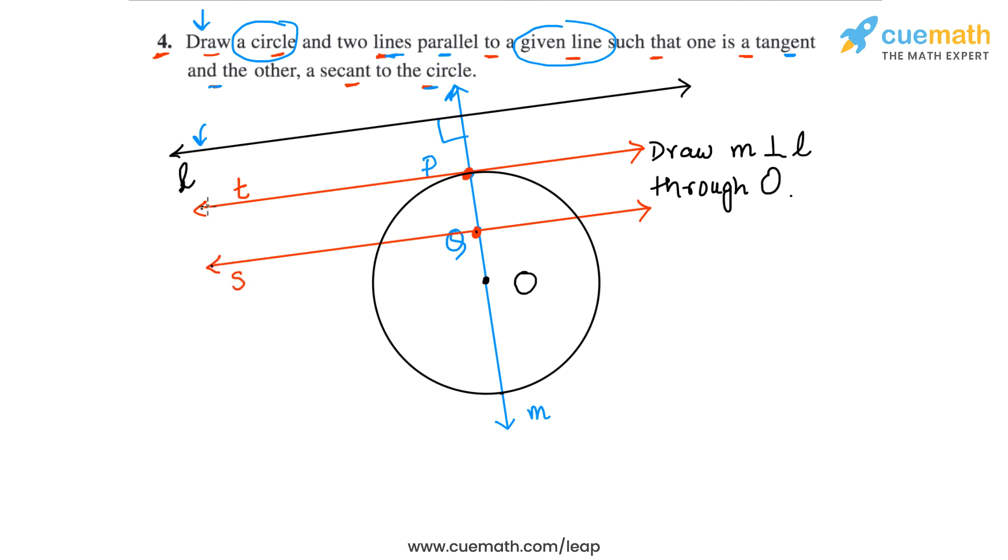You can see that T is a tangent, the line T is a tangent to the circle and it is parallel to the given line L because this is how we have drawn it. This angle is 90, this angle at P and this angle is also 90. So basically these are corresponding angles. So T is parallel to L and similarly S is also parallel to L because we have drawn S perpendicular to M. S is a secant to the circle because it intersects the circle in two different points.